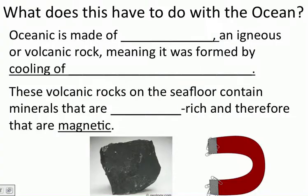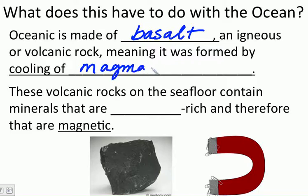Okay, so what does that magnetic field then have to do with the ocean? Well, we know the ocean is, of course, made of basalt. And basalt, being an igneous rock, had to form from either cooled magma or lava.